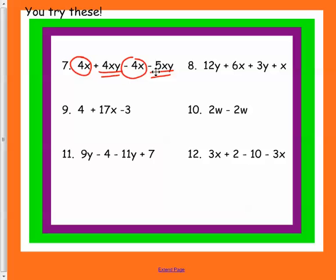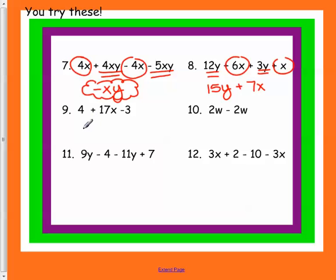So I have 4xy minus 5xy, so I have a negative xy. Remember, you don't need that one in front. It's not simplified if you put it there. I've got a 12y and a 3y, a 6x and an x, and all of these are positive, so we just add them together.